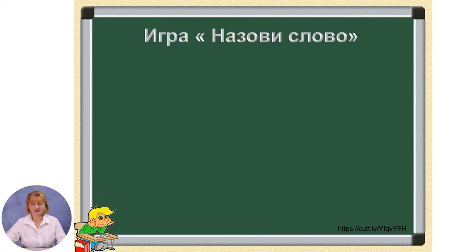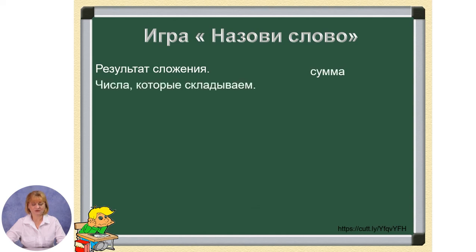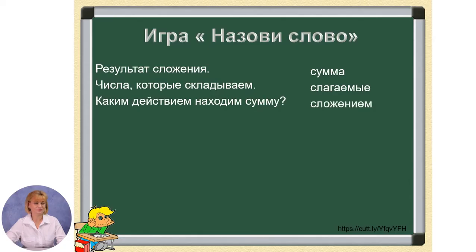Let's begin the lesson of mathematics and determine the topic of our lesson. Назовите результат сложения — name the result of addition. Это сумма — it is the sum. Числа, которые складываем, называются слагаемые — the numbers we add are called addends. Каким действием находим сумму? — By what operation do we find the sum? Сложением — by addition. Каким действием находим слагаемые? — By what operation do we find addends? Вычитанием — by subtraction.